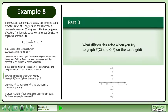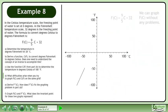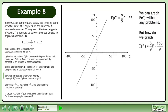In Part D, what difficulties arise when you try to graph f and c on the same grid? We can graph f of c equals 9 over 5c plus 32 without any problems. But how do we graph c of f equals 5 over 9f minus 160 over 9?